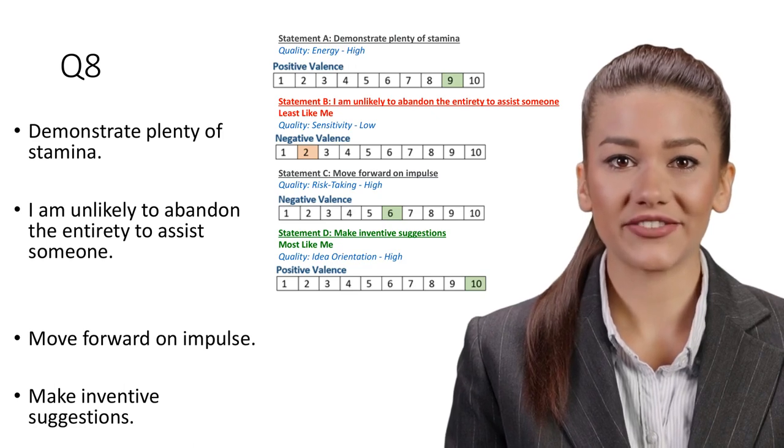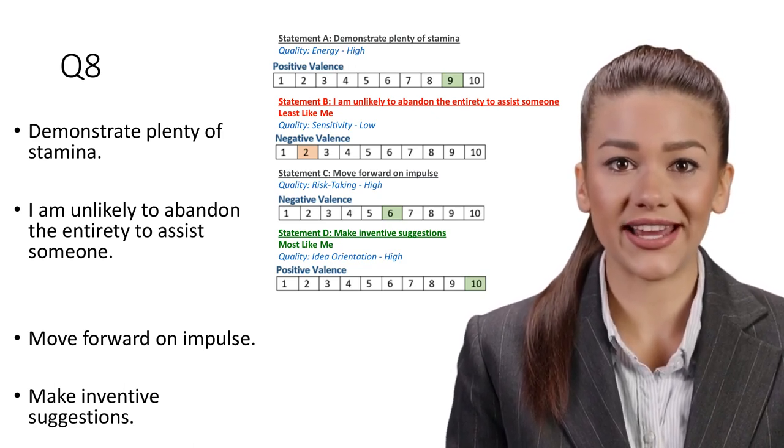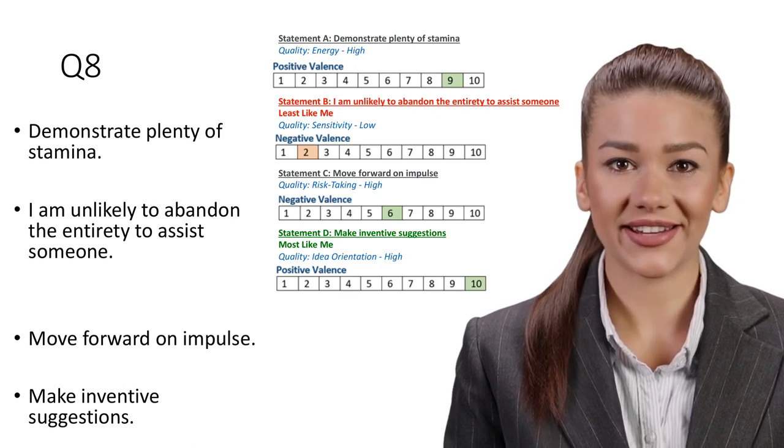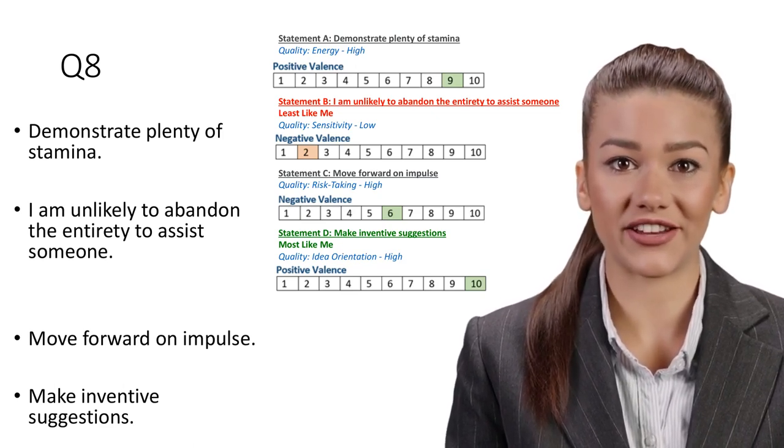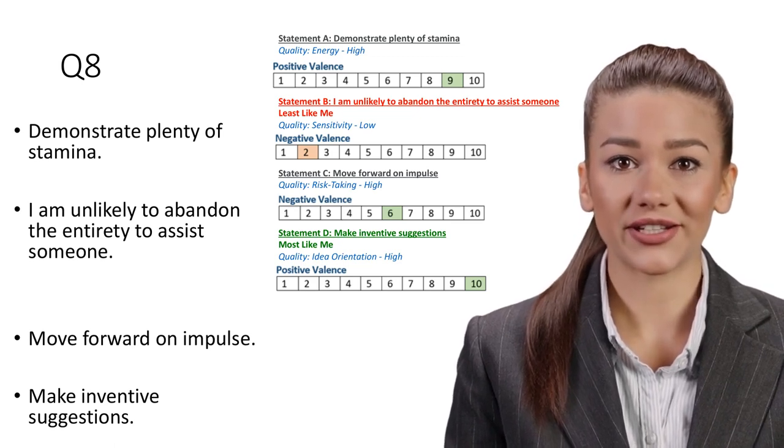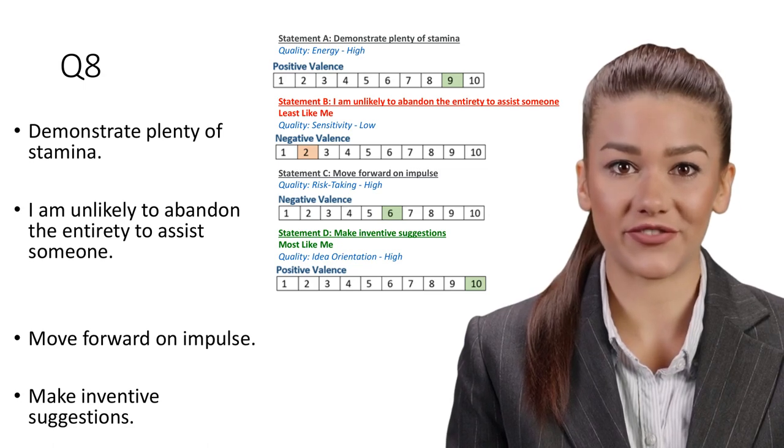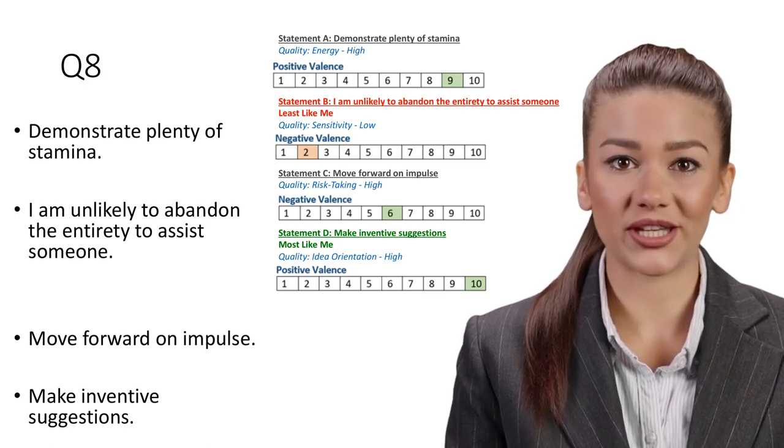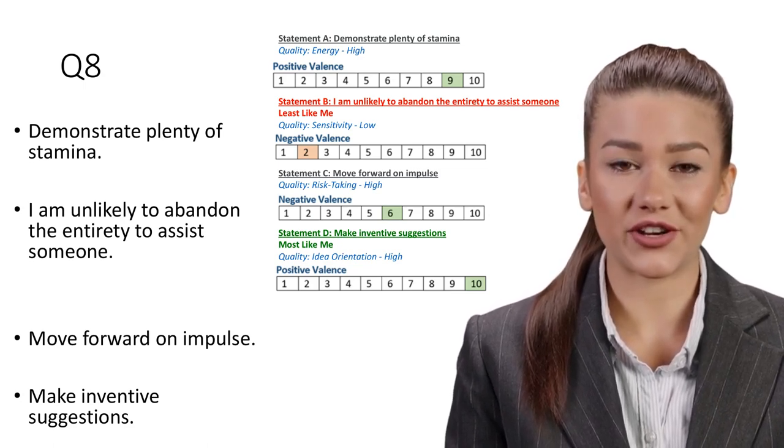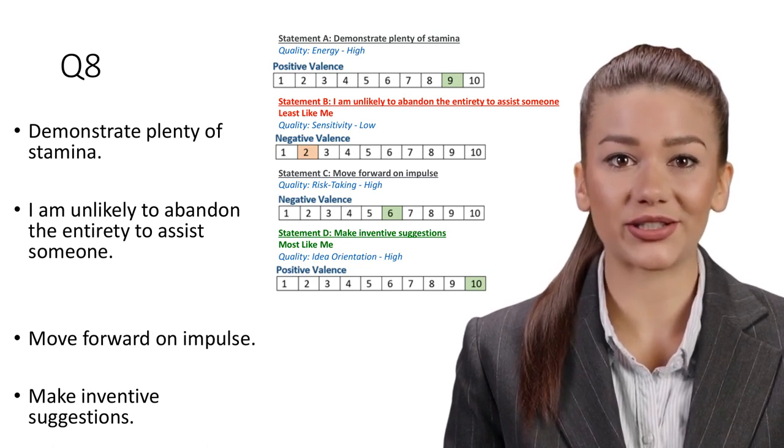Statement D: Make inventive suggestions. Most like me. Quality: Idea orientation, High. Creativity can benefit every function of an organization. In conjunction with a third factor, motivation, creativity determines a person's ability to perform well at work. In short, creative thinking and invention refer to how people approach problems and solutions, or how they combine existing ideas into new ones.